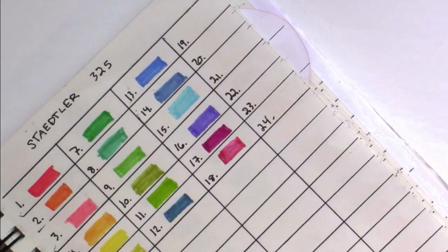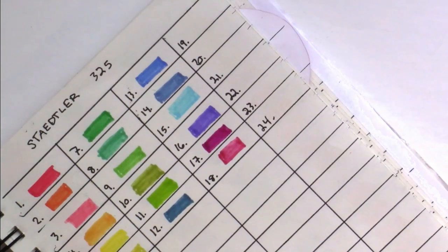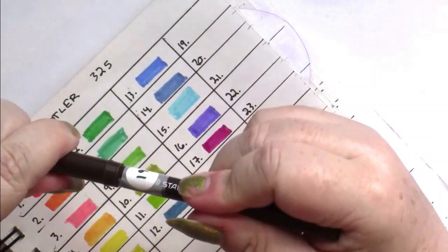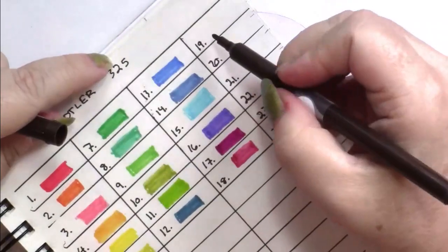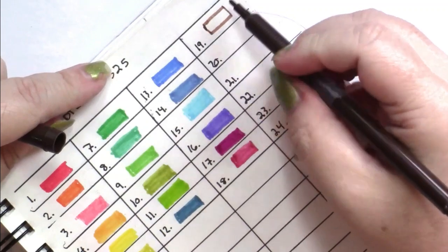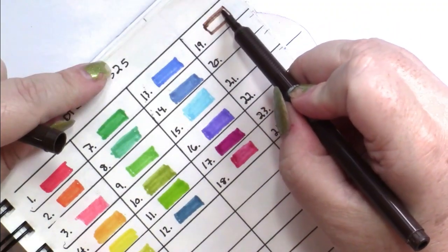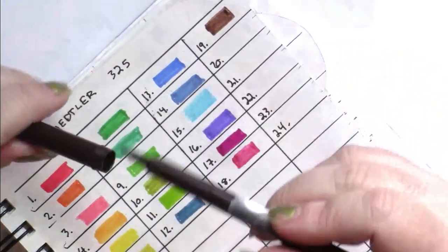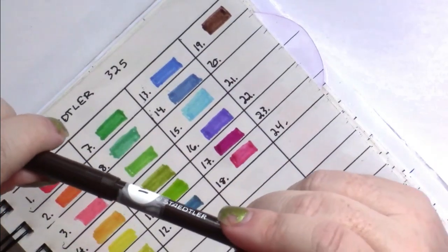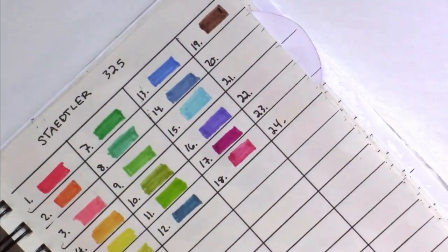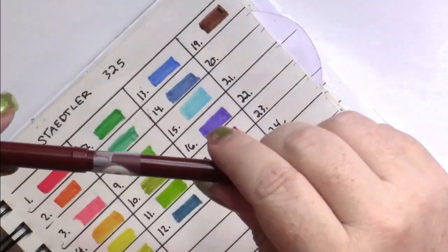Then we move on to the browns, or what I call the naturals. And we start with a very dark brown. Often in small packs of markers, the browns are lacking. But we have a decent selection here. I think, hopefully, these will all work for skin tones. Because that one definitely will. Well, it's our dark brown, but it's not way too dark.